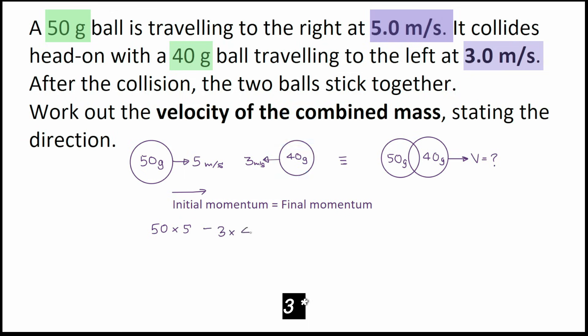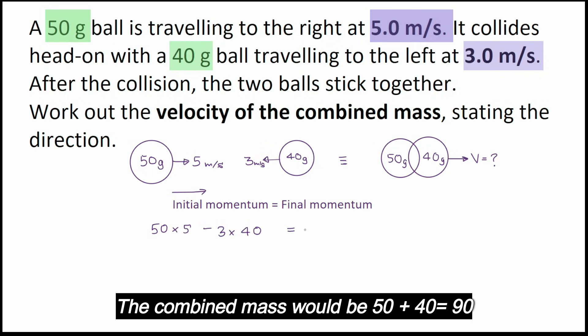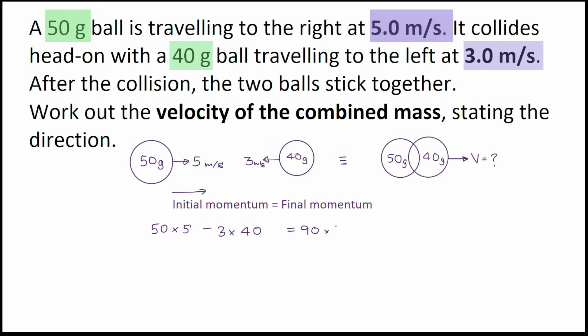3 times 40 is equal to final momentum. The combined mass would be 50 and 40, 90 times by v.